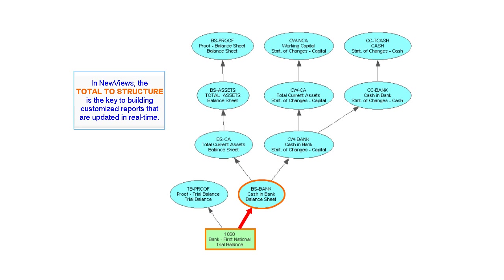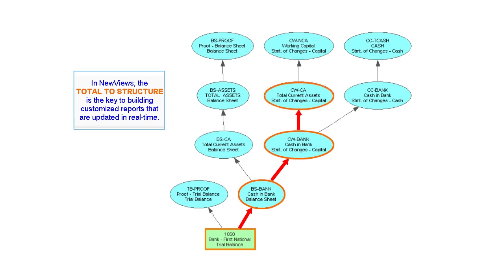Let's keep following the flow of these ripples. On the balance sheet, the Cash and Bank account totals to the Total Current Assets account, which totals to the Total Assets account, which totals to the proof account. The Cash and Bank account on the balance sheet also totals to the Cash and Bank account on the Statement of Changes in Capital report. That account totals to the Total Current Assets account, which totals to the Working Capital account. There is one last ripple: the Cash and Bank account on the Statement of Changes in Capital report also totals to the Cash and Bank account on the Statement of Changes in Cash report, which in turn totals to the Total Cash account on that report.